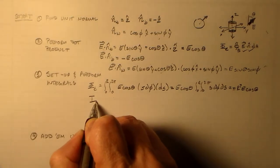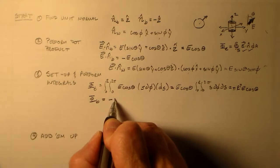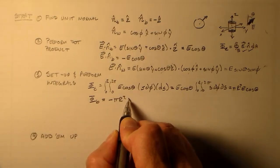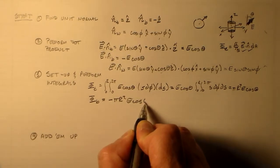Phi b, of course, is exactly the same, so it's minus pi r squared e cosine theta.